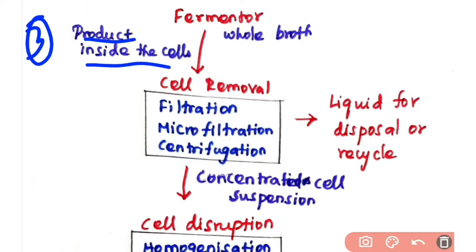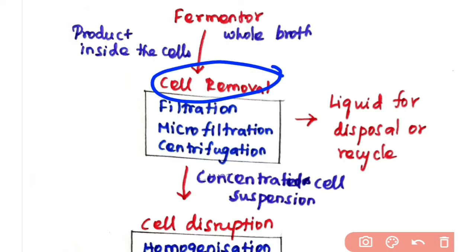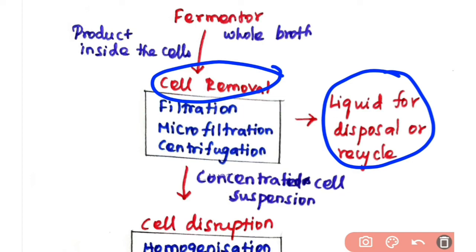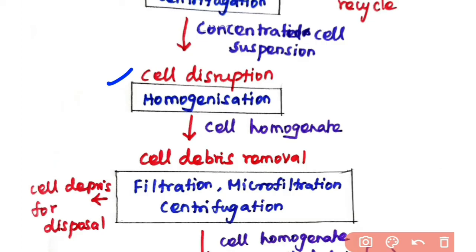The third type is where the product is present inside the cells. The broth from the fermenter undergoes cell removal using filtration, microfiltration, or centrifugation to remove the cell mass from the liquid. The liquid is disposed of or recycled, and a concentrated cell suspension is obtained. The next step is cell disruption, because the product is inside the cells — you must break them open. Homogenization is used to break open the cells and release their contents for subsequent purification.